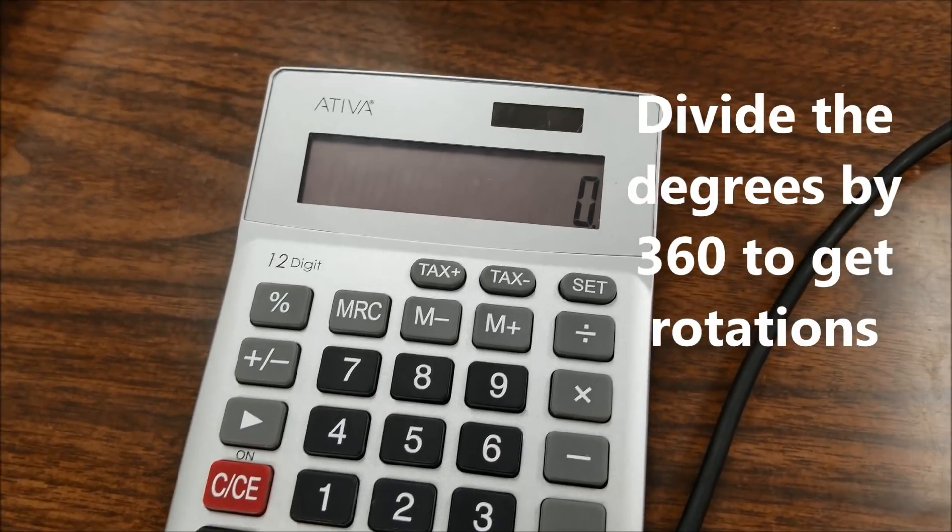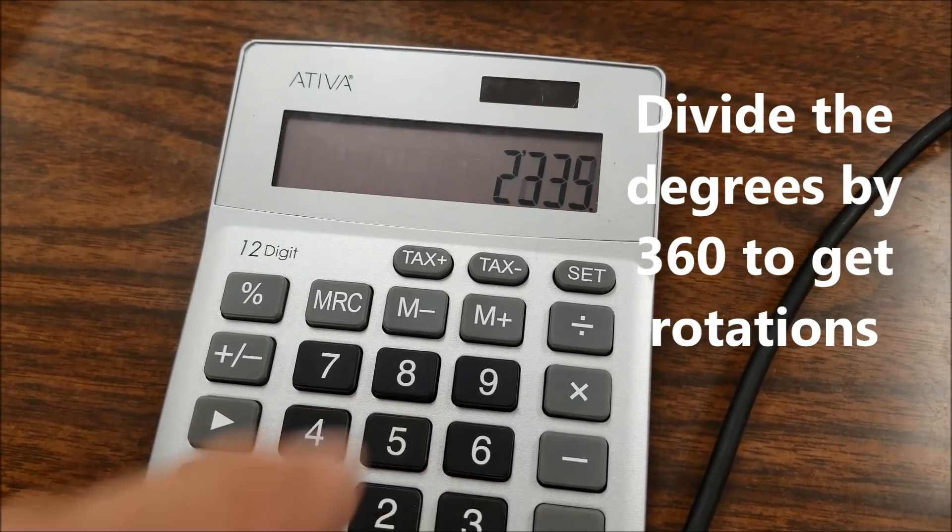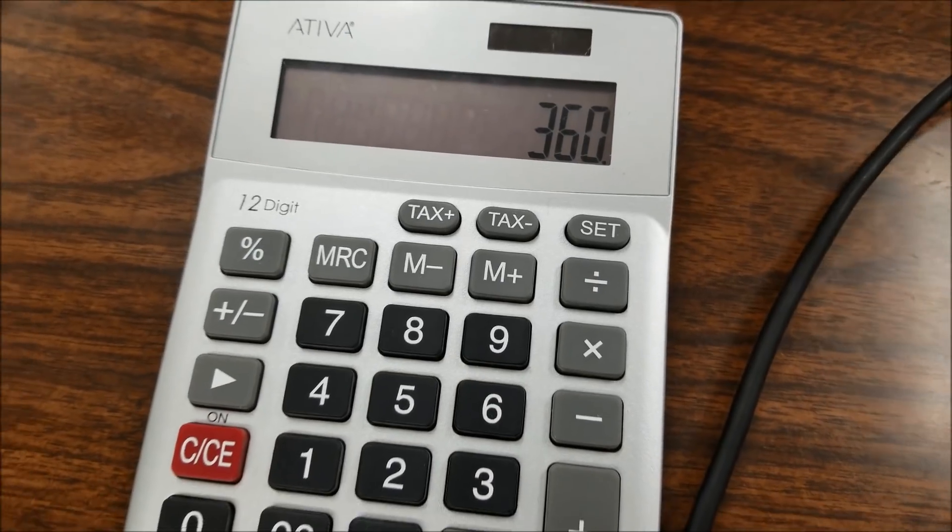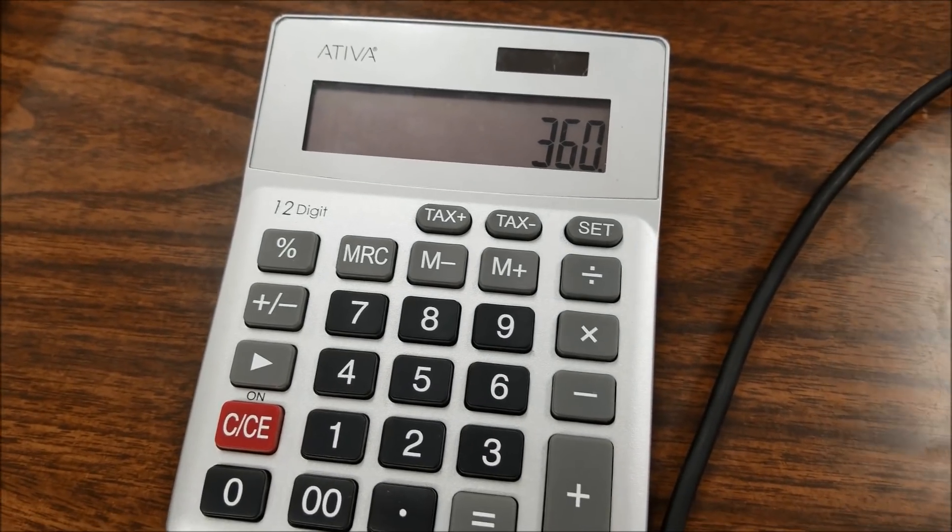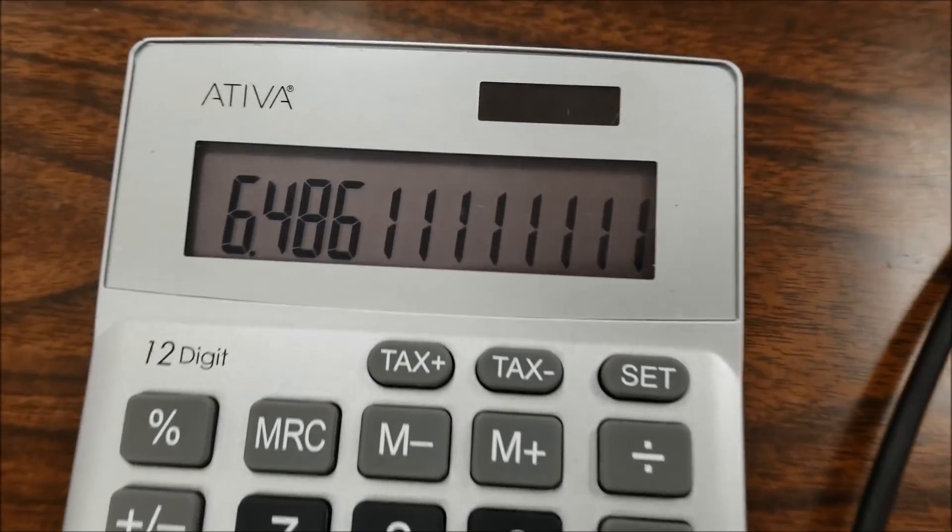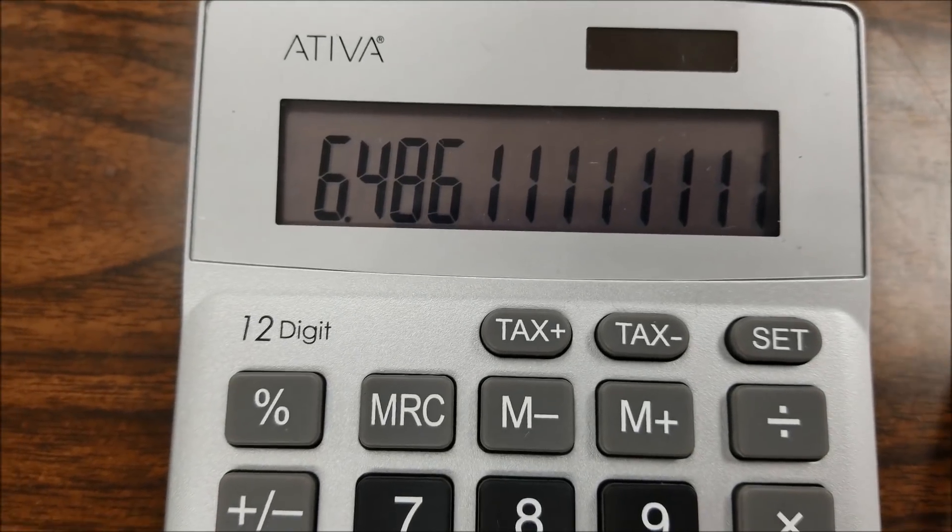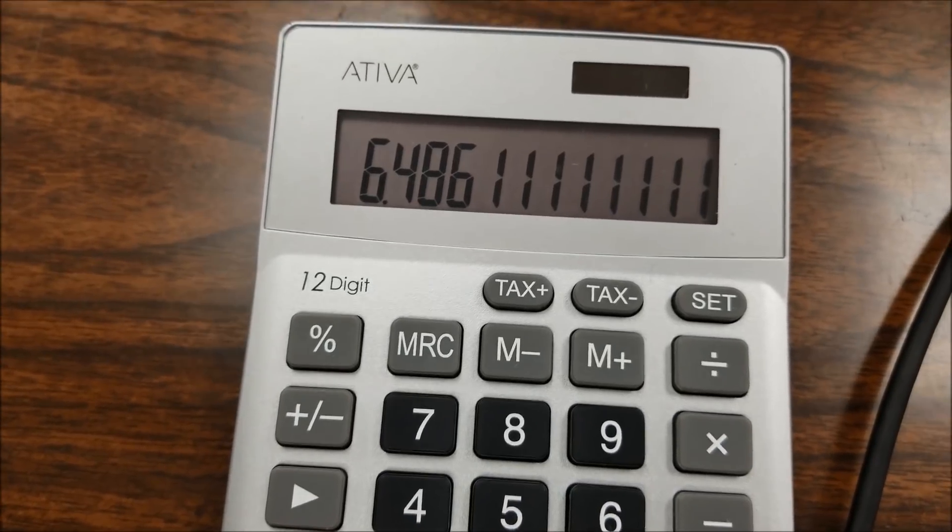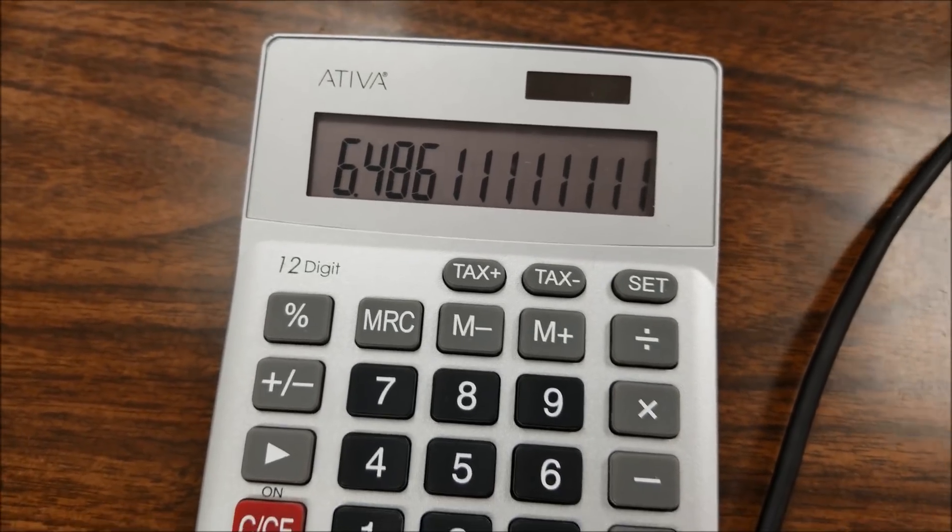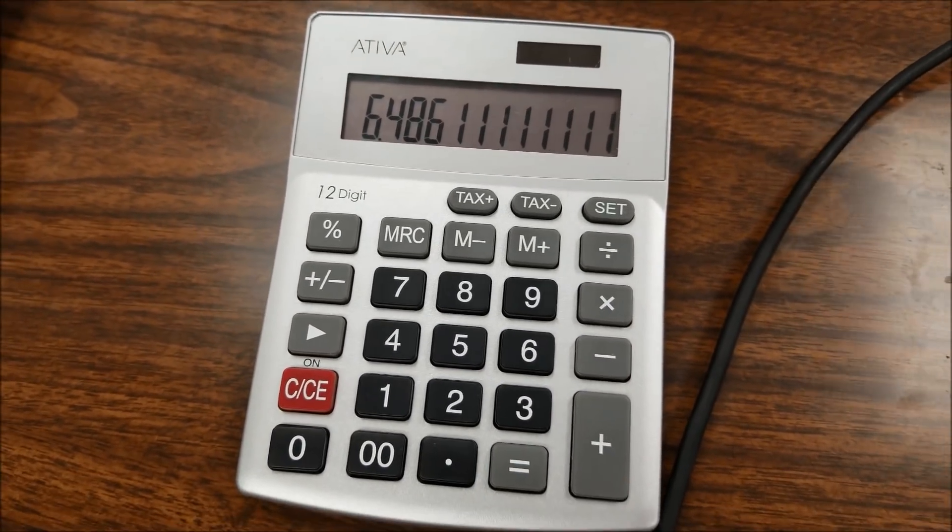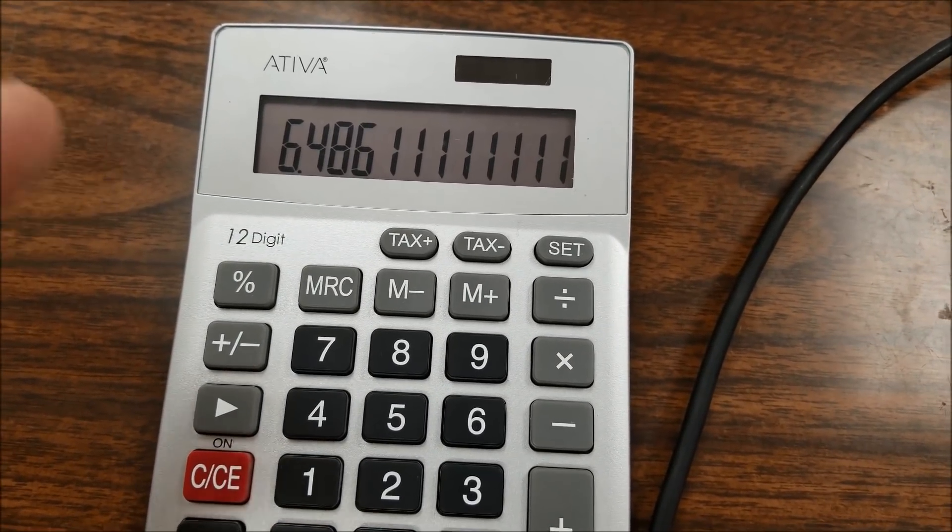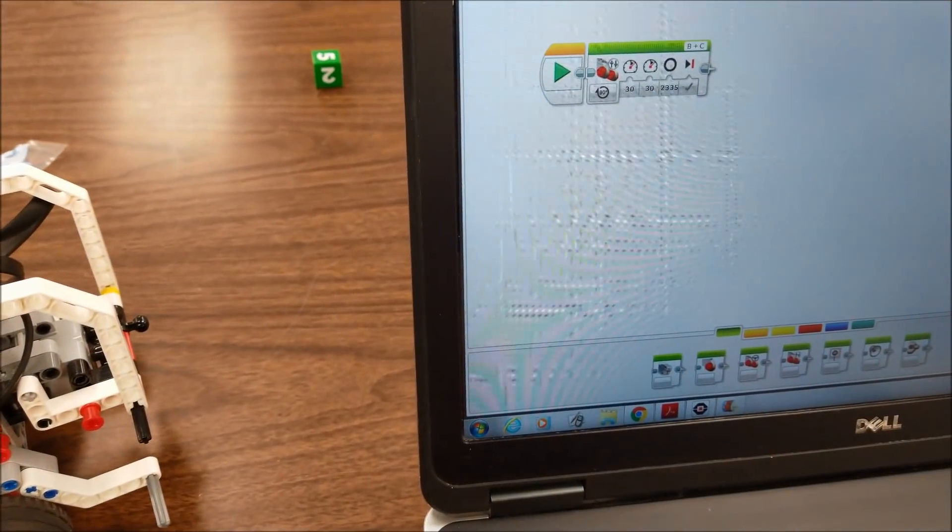Okay, so if we take those 2,335 degrees and divide it by 360, because that would be the amount of degrees in a rotation, we should end up with 6.486. You guys can figure out the mess here. You can see how we can do this with rotations, but it's going to get a little messy. So let me go ahead and just put in 6.486 rotations here in the program, and then we'll head back over to the table.